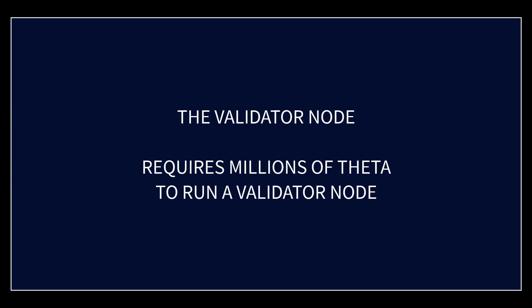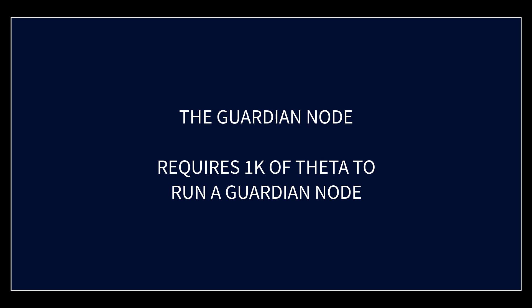The top-level node is the validator node. This is the node that validates all transactions on the blockchain and creates the blocks. The guardian node validates the validator node — in other words, they go behind the validator node.